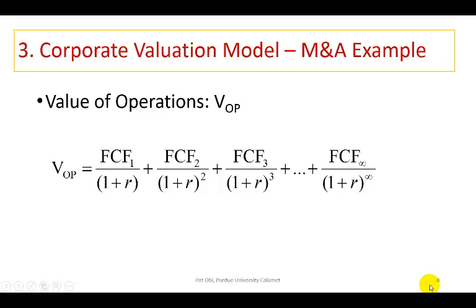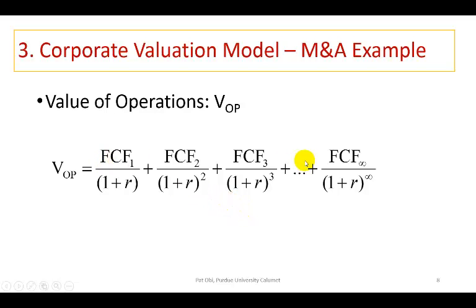This presentation shows an example of the corporate valuation model in the specific case of merger valuation. The value of a firm's operations is the present value of the projected free cash flows over the horizon. This tells us there are two key ingredients: we need to estimate the free cash flows, and we need to estimate the weighted average cost of capital of the target firm.